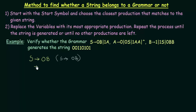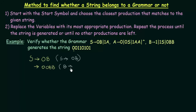Now we got this first 0. We need one more 0, and the variable we have is B. From B, in order to get 0, we look at B's productions: B gives 1S and 0BB. The production B gives 0BB is what I need in order to get a 0. So I replace B with 0BB — using the production B gives 0BB.